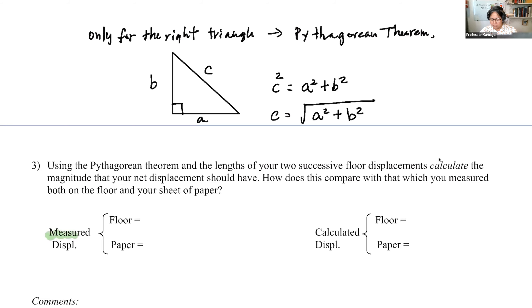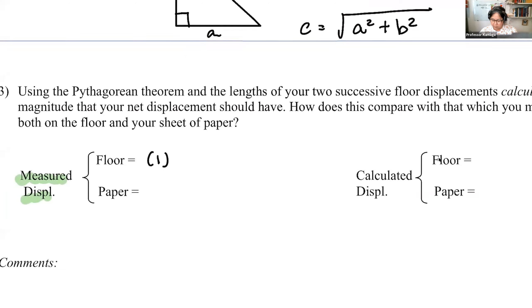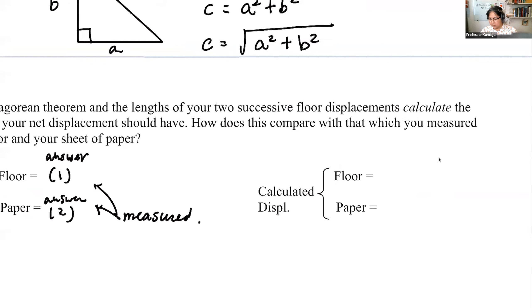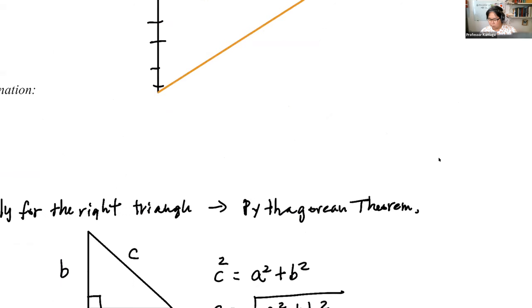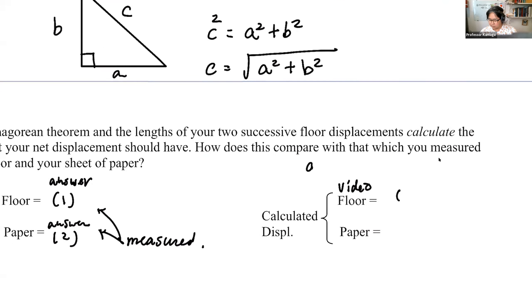Use this Pythagorean theorem to calculate the displacement you saw in the video and on the paper. The measured displacement from question one and question two are what you actually measured. Then use the Pythagorean theorem to calculate: for the floor/video case, it's the square root of 1.5 meters squared plus 2 meters squared.